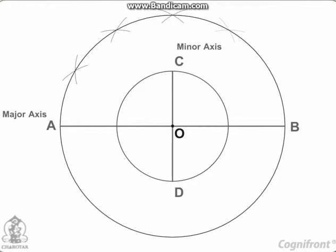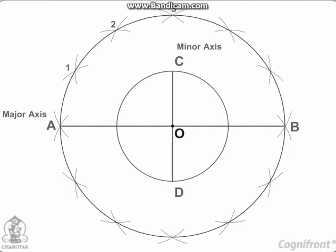Divide the major axis circle into a number of equal divisions, say 12, and mark points 1, 2, etc., as shown in the figure.